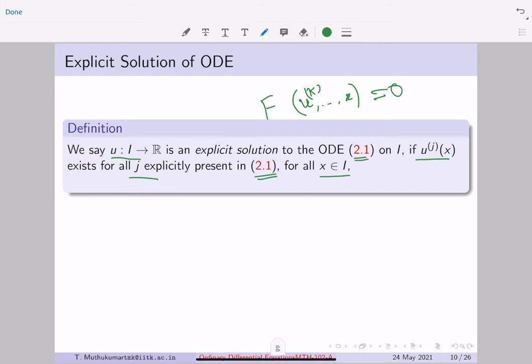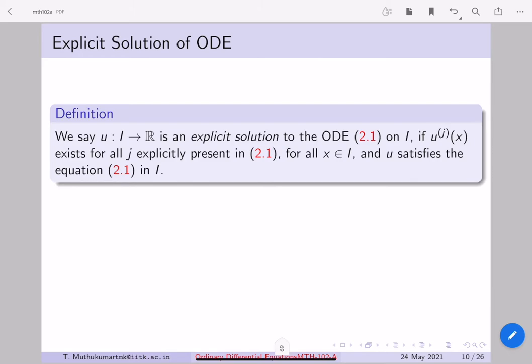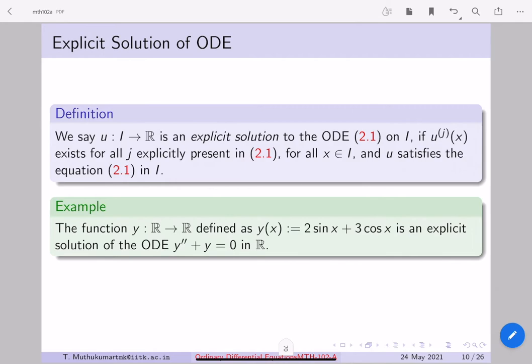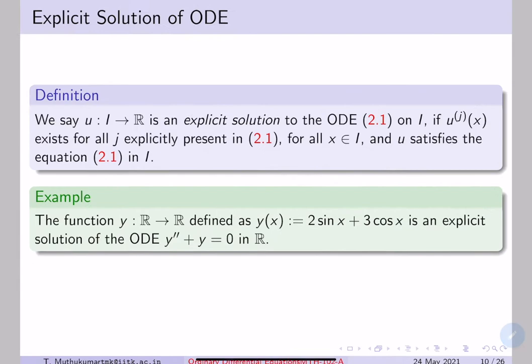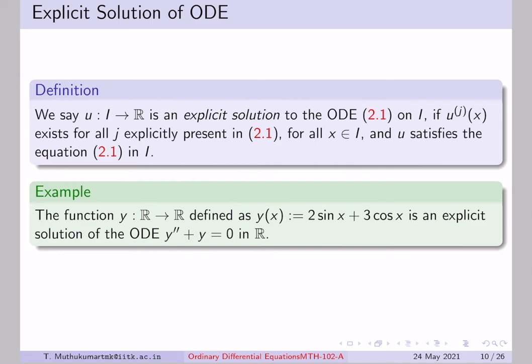That is easy to understand — it is a natural notion of solution. You are looking for a function which satisfies the equation, and if it has to satisfy the equation it must be differentiable as many times as the derivatives appearing in it. A quick example: you can check immediately that y = 2sin(x) + 3cos(x) is an explicit solution to y'' + y = 0.